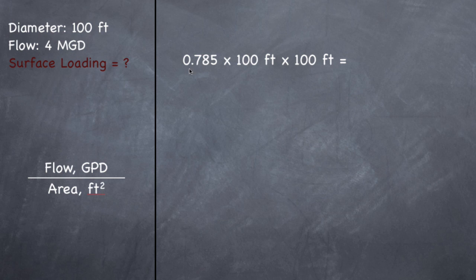So we just do the volume formula without the depth. So 0.785 times the diameter squared, so 100 feet times 100 feet, should give you a surface of 7,850 square feet.